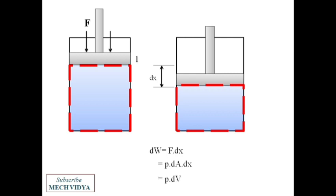To get the total work done in displacing the piston from state 1 to state 2, we have to do integration. We have to integrate this expression. This is how we get the PdV work.